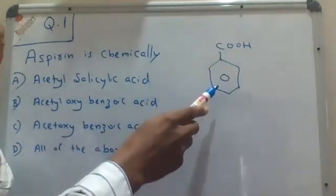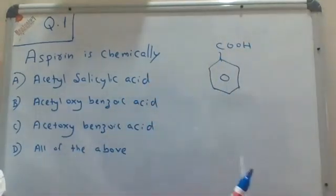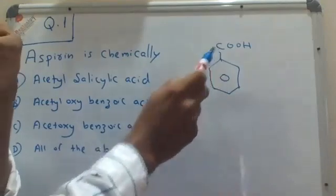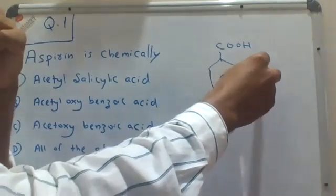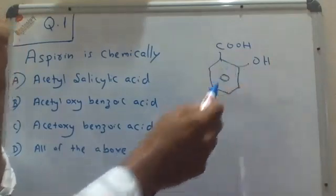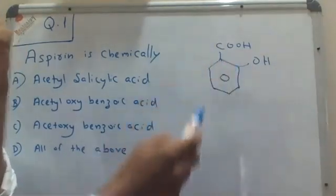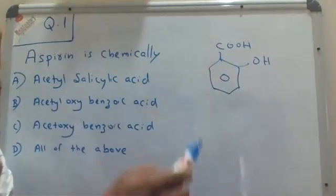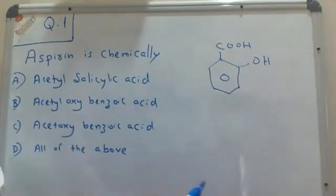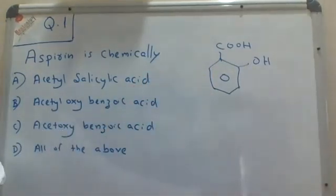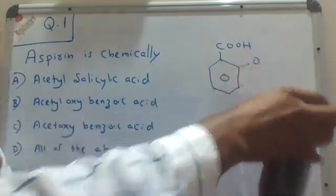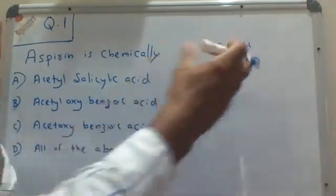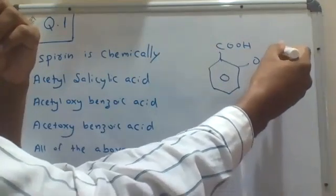When you draw a benzene ring with a carboxyl group, this is called benzoic acid. In this benzoic acid, if you attach a hydroxyl group at the second position — the ortho position — this is called salicylic acid.